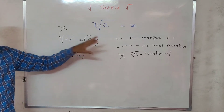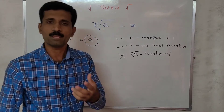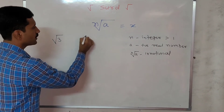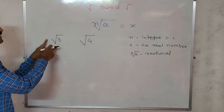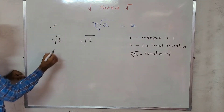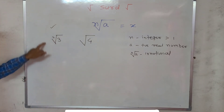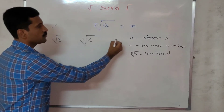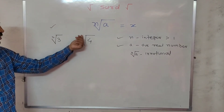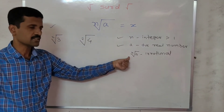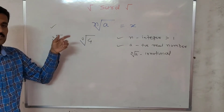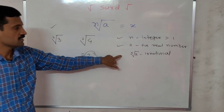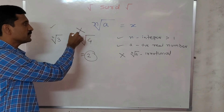So we must understand these three conditions. Now you can understand why square root of 3 is a CERT and square root of 4 is not. All three conditions are satisfied by square root of 3: the order is 2, the radicand is a positive real number, and square root of 3 is irrational. For square root of 4, the first two conditions are satisfied, but square root of 4 equals 2, which is rational, not irrational. So the third condition is not satisfied and square root of 4 is not a CERT.